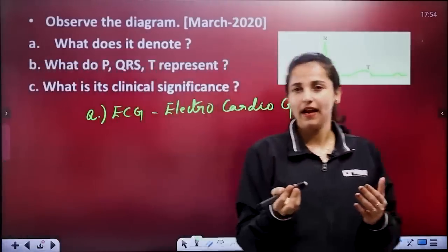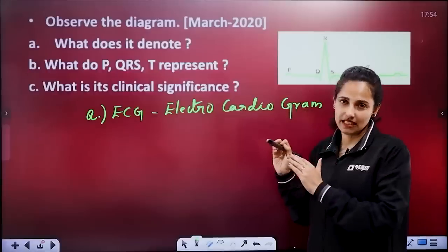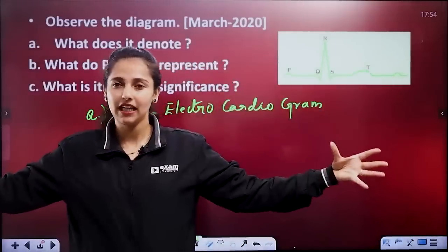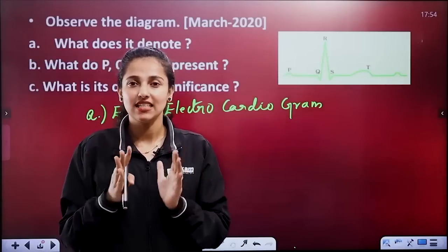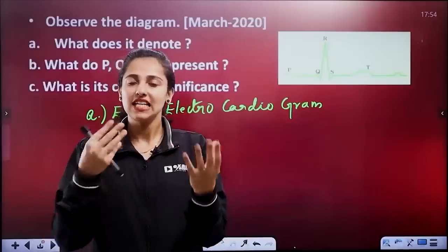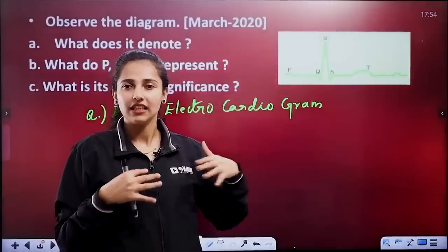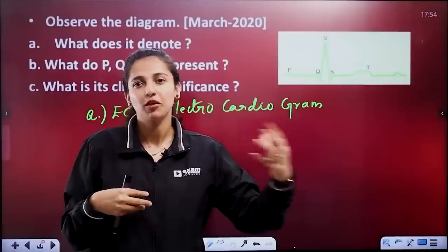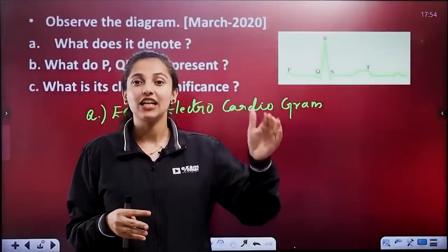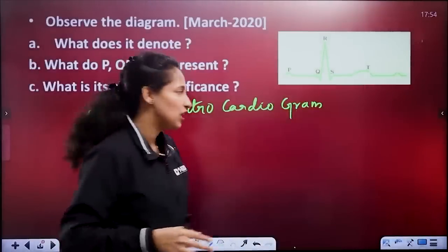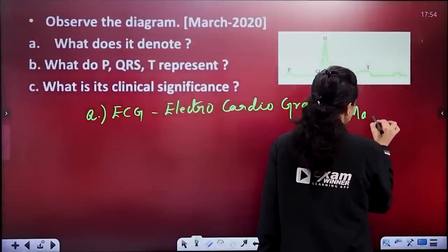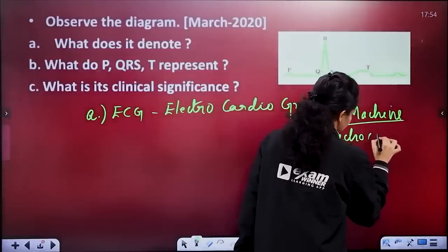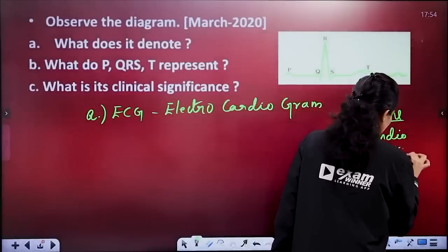We will expand here. This is a graphical representation called an ECG — electrocardiogram. You can see that there is electrical activity shown in the machine, which is called an electrocardiogram.